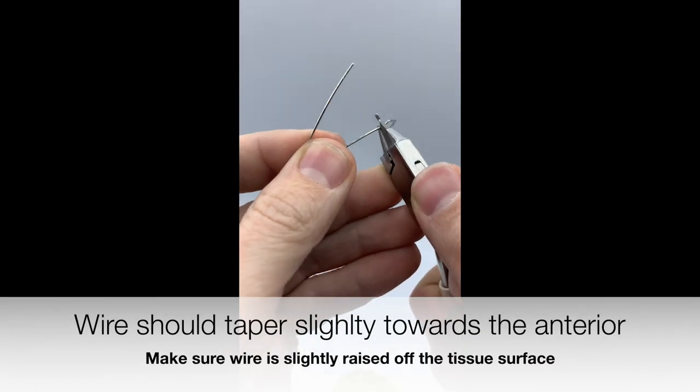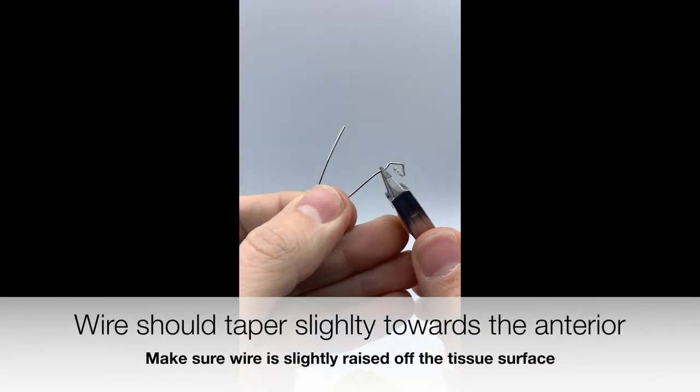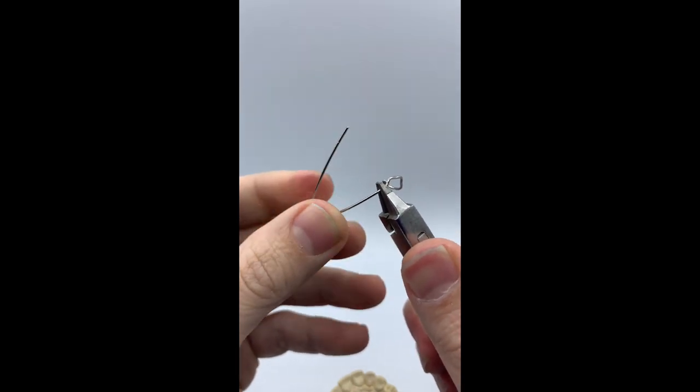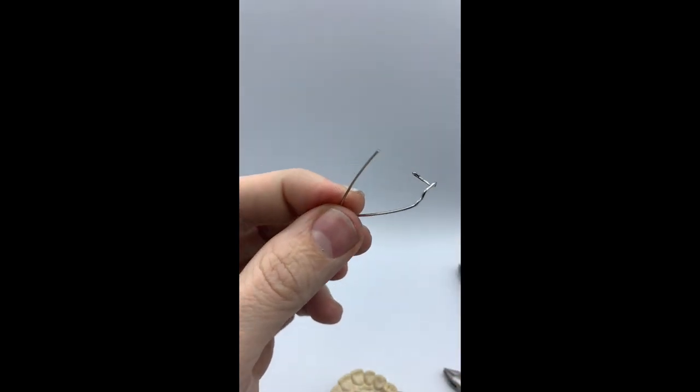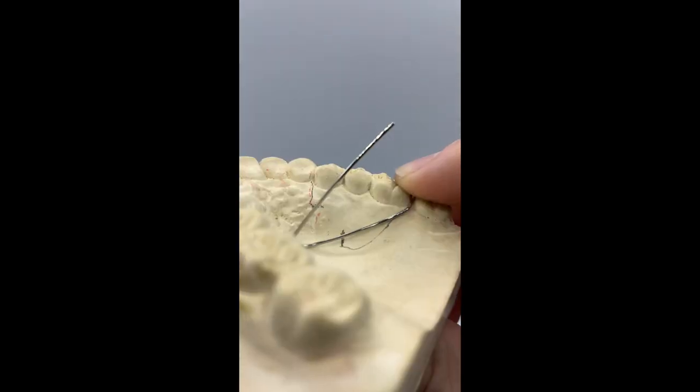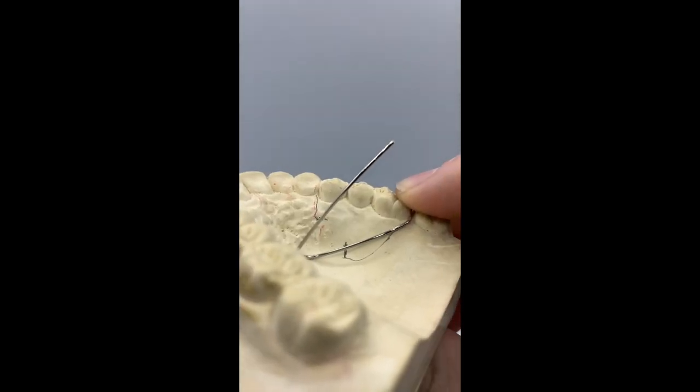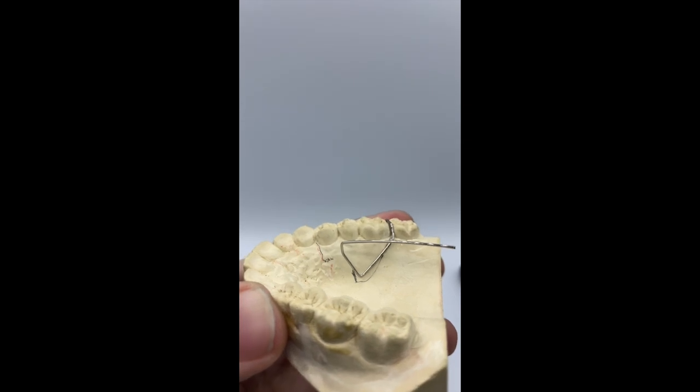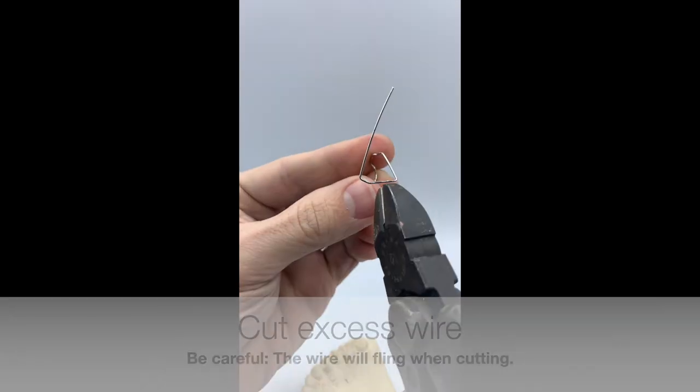We are now going to bend our wire towards the mesial to finish our tail. Remember, the wire should not contact the tissue surface. It should be slightly above it so that acrylic can flow underneath it.